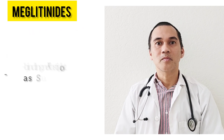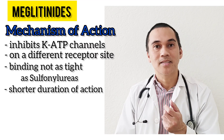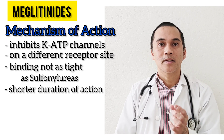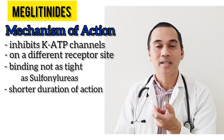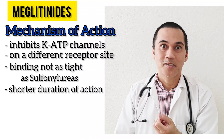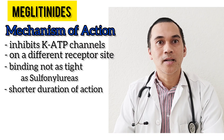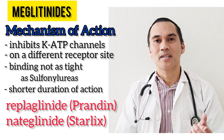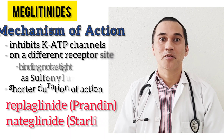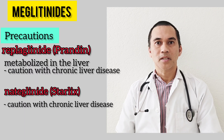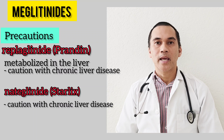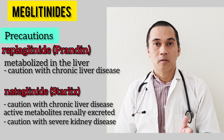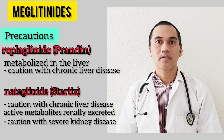Proceeding with meglitinides: same as sulfonylurea, it inhibits your K-ATP channels, but it binds on a different receptor — a different site on the sulfonylurea receptor. The binding is not too tight, so the duration of action is shorter than sulfonylureas. These are repaglinide and nateglinide. The meglitinides are metabolized in the liver, so use caution for patients with chronic liver disease. Nateglinide, aside from being metabolized in the liver, is also renally excreted with active metabolites, so use caution for patients with severe kidney disease.